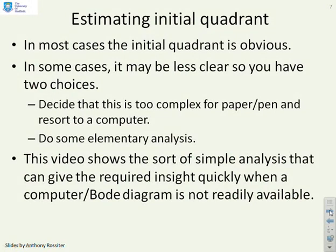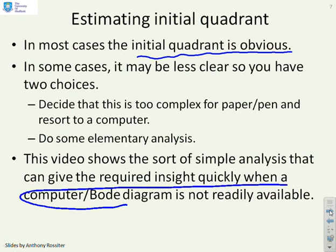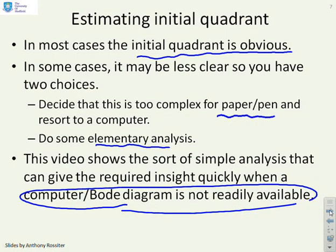So what can we say here? If you've got a good Bode diagram, then the quadrants are probably obvious. However, what are you going to do if the Bode diagram is not readily available and you have to do some form of sketching or elementary analysis? So we need to look at paper-pen exercises which are simple, which enable us to get this quadrant where we don't have the information already.